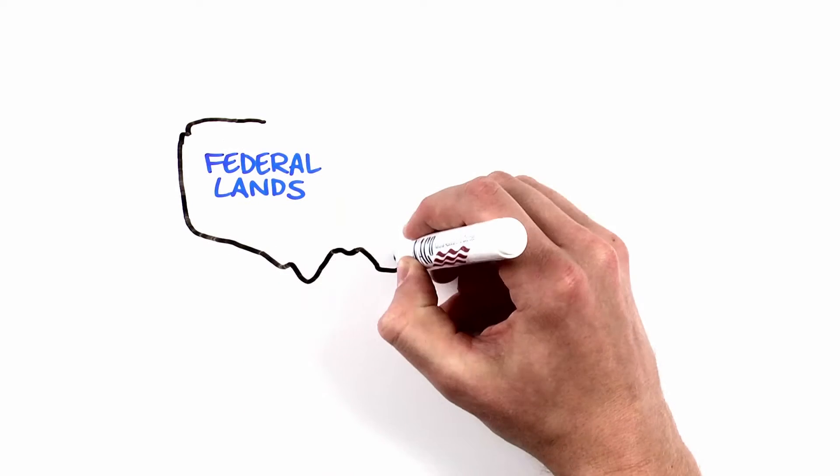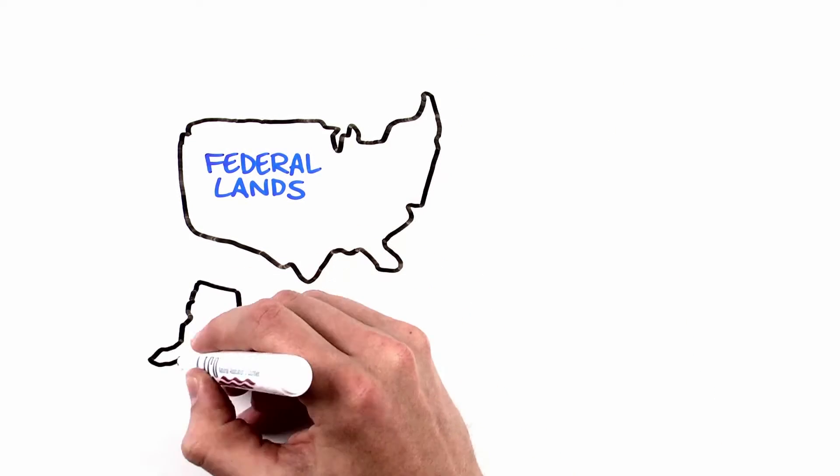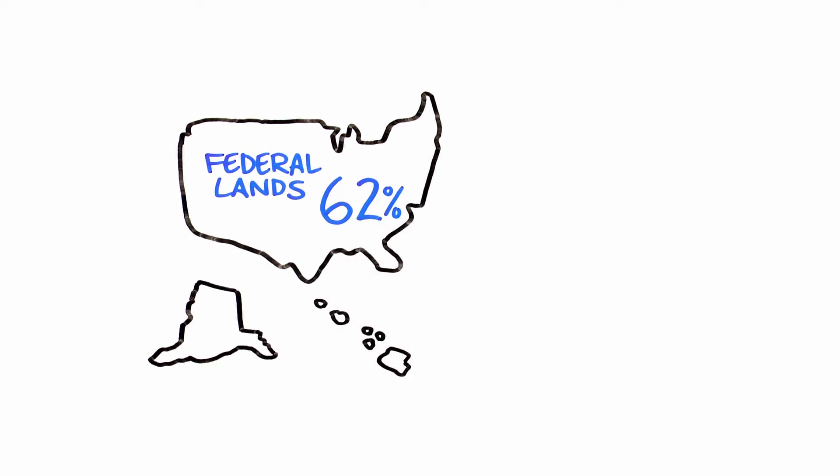Federal lands cover nearly one-third of the United States, touching 62% of America's 3,069 counties, parishes, and boroughs.